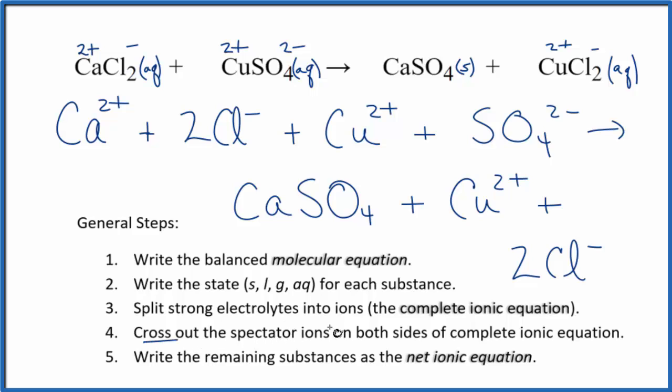Now we can cross out spectator ions. They're on both sides of the complete ionic equation. They haven't changed, so we're not interested in them. So I can see here in the reactants, we have 2 chloride ions, and in the products, again, we have 2 chloride ions. Those are spectator ions. We'll cross those out.